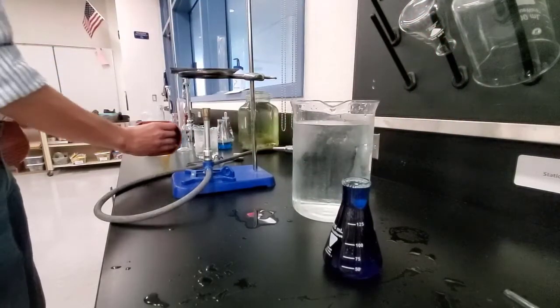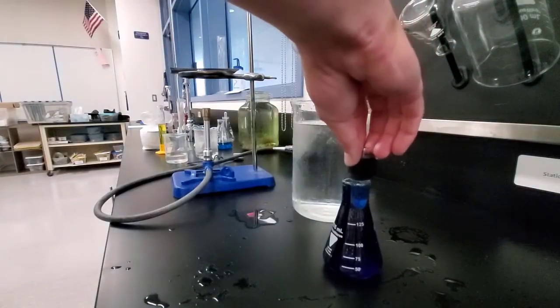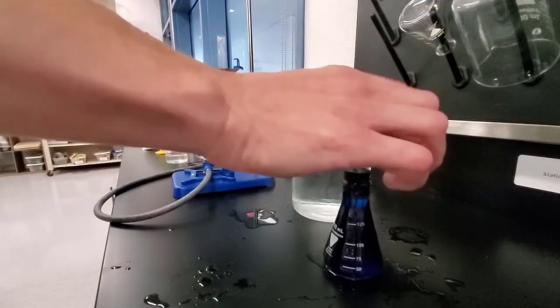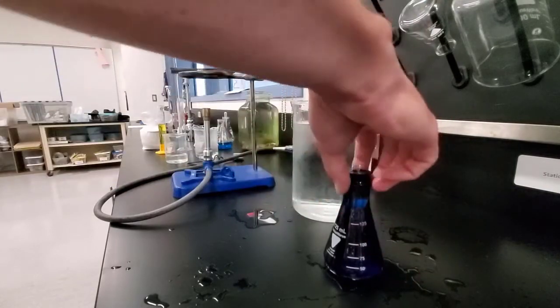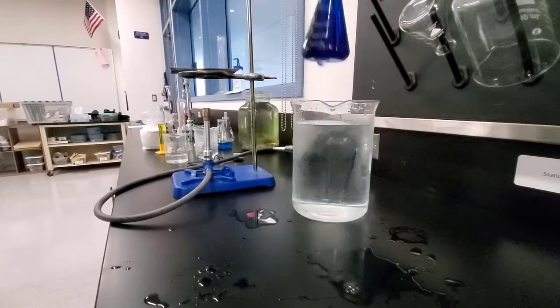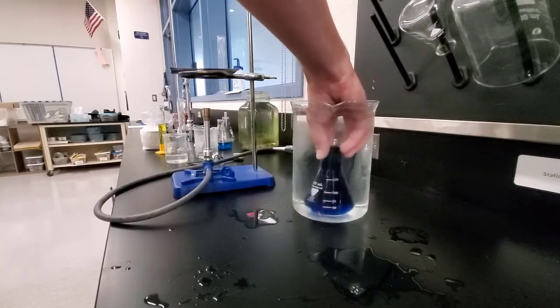Filling it completely to the top, and then what I'm going to do is take my stopper with my two glass tubes and push it down carefully, and then I'm going to submerge the entire Erlenmeyer flask into the large 2,000 milliliter beaker of water.